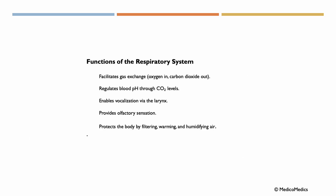Let's start with the functions of the respiratory system. Function number one: it facilitates gas exchange, which means oxygen is coming in and carbon dioxide is going out. Furthermore, it regulates blood pH through carbon dioxide levels. It enables vocalization via the larynx. It provides olfactory sensation. It protects the body by filtering, warming, and humidifying air.